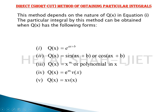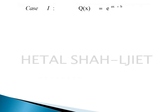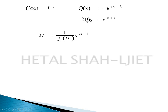In today's lecture, we learn for Case 1 and Case 2. For Case 1, when Q(x) = e^(ax+b), meaning an exponential term is given on the right hand side. For finding the particular integral, the formula is (1/f(D)) · e^(ax+b). You substitute the coefficient 'a' in place of D in f(D). The condition is f(a) must not equal zero.